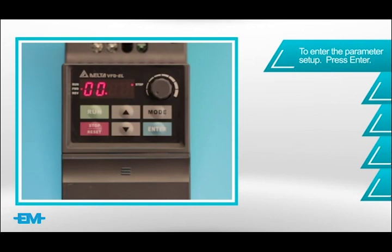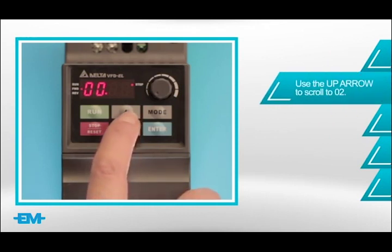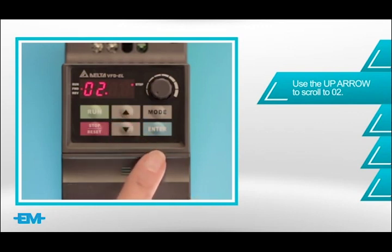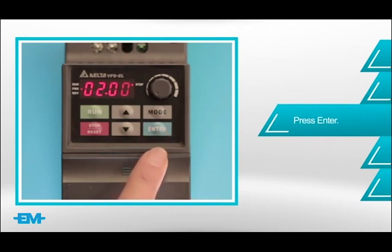To set up the speed reference, you need to change the parameter 02.00. Use the up arrow key to scroll to 02, which is group 2 operation method parameters. Press enter and the display will show 02.00.